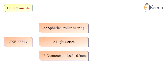Let's understand with an example. If the bearing is designated as SKF 22213, the first two digits '22' represent that it is a spherical roller bearing. The next digit '2' represents light series. The last two digits '13' represent the diameter code, and since the diameter equals this number multiplied by 5, the bore diameter is 13 × 5 = 65 mm.